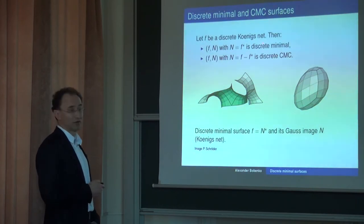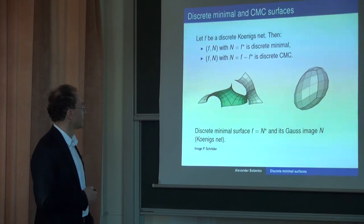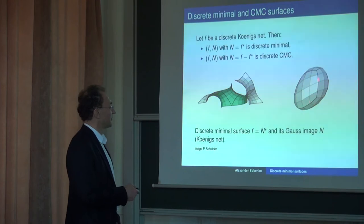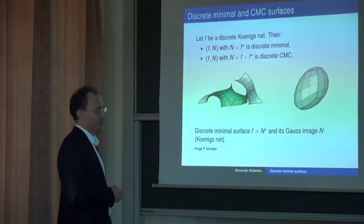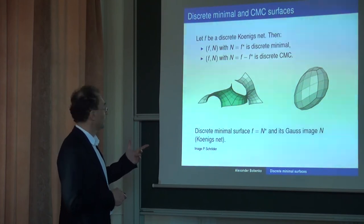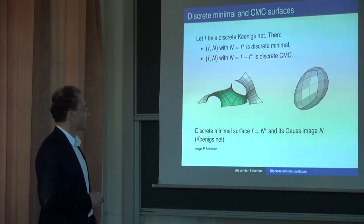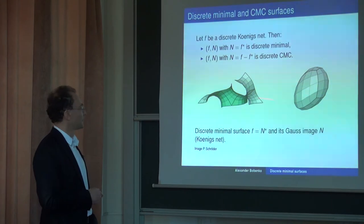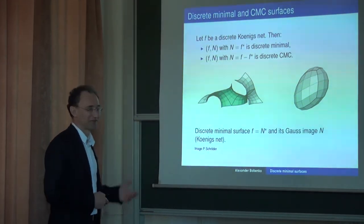If f is a discrete Koenigs net, you just dualize it, treat this dual surface as n, and take this pair — this will be a minimal surface because these two are orthogonal with respect to our mixed area scalar product. Here you see an example: a Koenigs net and its dual. This can be seen as a minimal surface and its Gauss map. But then there is a problem — the theory is absolutely symmetric, so you can't distinguish which is the minimal surface and which is the Gauss map.